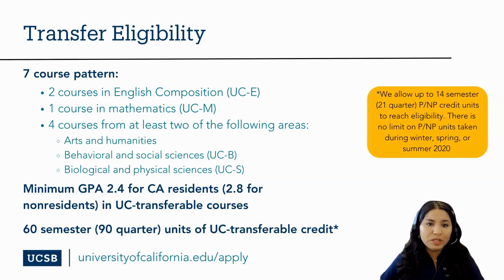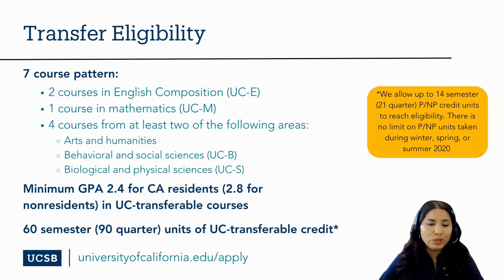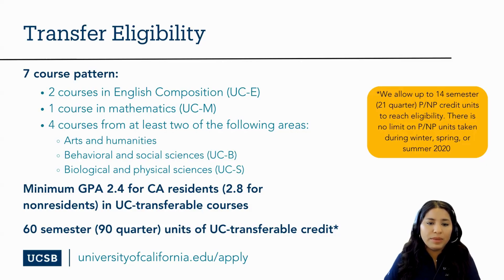UCSB only accepts applications for transfer admissions in the fall term. To be eligible for transfer admissions at any UC campus, applicants must complete these requirements by the end of the spring term before fall transfer. The seven course patterns include two courses in English composition (UCE), one course in mathematics (UCM), and four courses from at least two of the following three areas: arts and humanities, behavioral and social sciences, and biological and physical sciences. The minimum GPA to be considered for admissions is a 2.4 for California residents and a 2.8 for non-residents of California, but we usually admit students with higher GPAs than the minimum. Transfer applicants must also complete at least 60 semester or 90 quarter units of UC transferable credit to be eligible for junior transfer. Up to 19 semester or 21 quarter units of pass/no pass credit may be used to meet the minimum eligibility requirements. There may also be specific course and GPA requirements for your intended major, which vary based on the major and the UC campuses that you apply to.